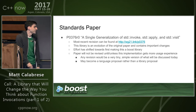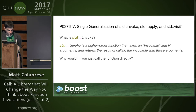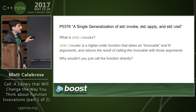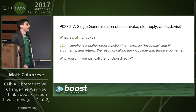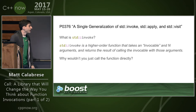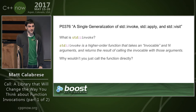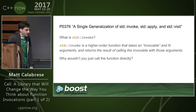I may actually turn this into a language proposal rather than a library proposal. Before going into the actual details, I'll talk about the title of the paper: 'A Single Generalization of std::invoke, std::apply, and std::visit.' To make sure we're all on the same page, we need to know exactly what std::invoke, std::apply, and std::visit are. How many people are already familiar with std::invoke? Good — most of the people in this room.